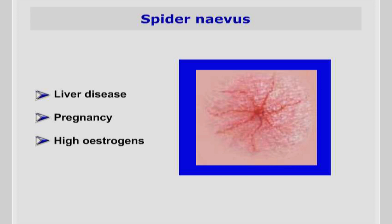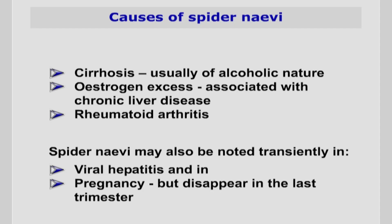Spider naevi are surface capillaries or telangiectasias with a large central arteriole from which smaller ones radiate outwards. They are mostly found in the drainage areas of the superior vena cava, such as the chest wall, shoulders, arms, and neck. When pressure is applied to the central arteriole, the spider naevus blanches, and if a glass is pressed against it, you may observe the arterial pulsations. Finding more than two to five spider naevi is considered abnormal. Causes include cirrhosis (usually alcoholic), oestrogen excess associated with chronic liver disease, and more rarely rheumatoid arthritis. Spider naevi may also be seen transiently in viral hepatitis and in pregnancy, disappearing in the last trimester.